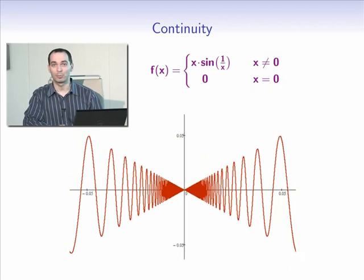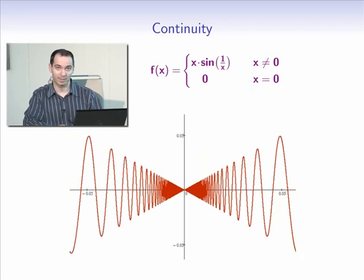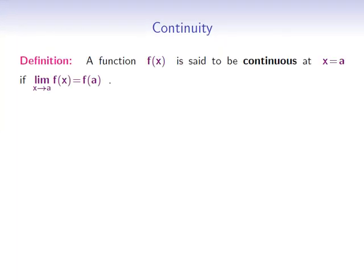Fortunately, a precise definition can be given using limits, and here it is. A function f of x is said to be continuous at x equals a if the limit of f of x as x approaches a is equal to f of a.